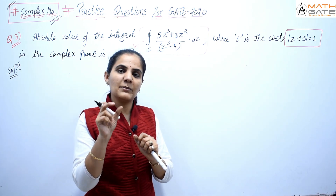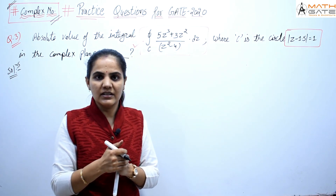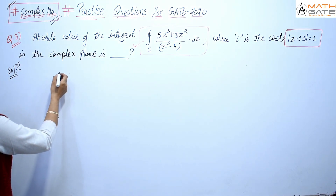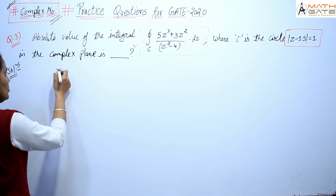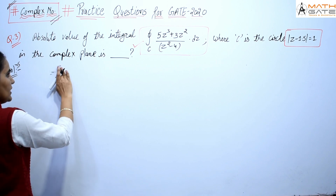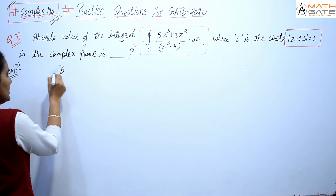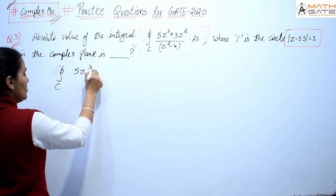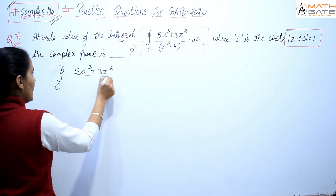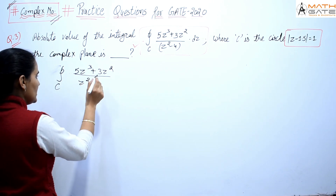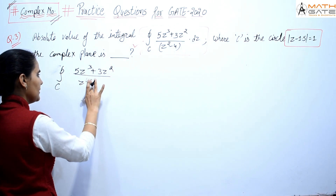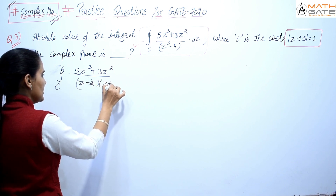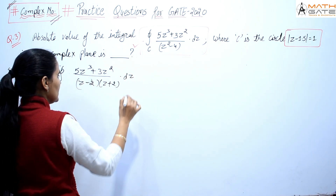We need to find the modulus of this complex integral. Let's solve it. The given function is the closed integration C of (5z³ + 3z²) / (z² - 4) dz. We can break z² - 4 as (z - 2)(z + 2) dz.